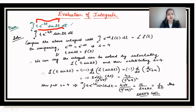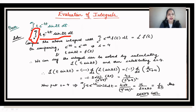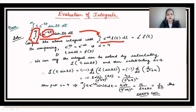Now let us see how to evaluate this integral using the Laplace transform. The integral is from 0 to infinity of t · e^(−4t) · sin(2t) dt. The limits are 0 to infinity and there is an exponential term, so we compare it with the basic Laplace definition: integral from 0 to infinity of e^(−st) · f(t) dt. Comparing, e^(−4t) corresponds to e^(−st), so s = 4.